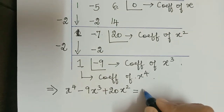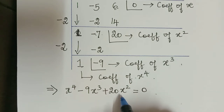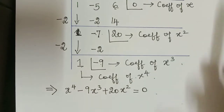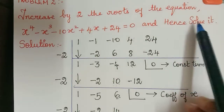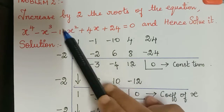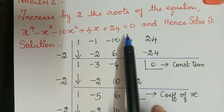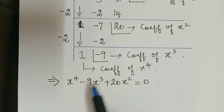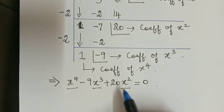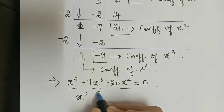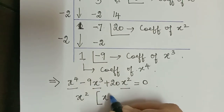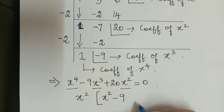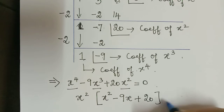We equate this to 0. This is the equation obtained after increasing the roots of the given equation by 2. Now they have also asked us to solve it. In all three terms x squared is common, so we take it out: x squared times (x squared minus 9x plus 20) equals 0.